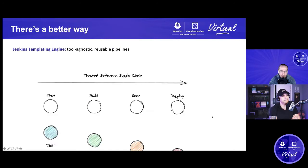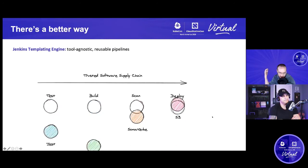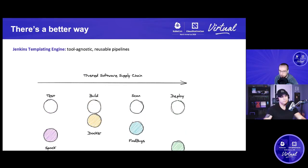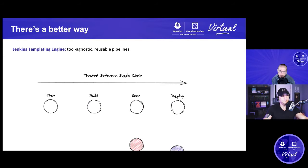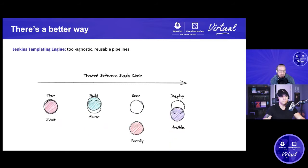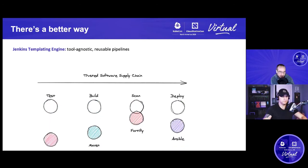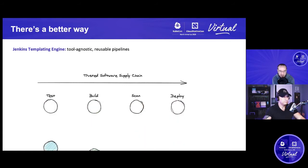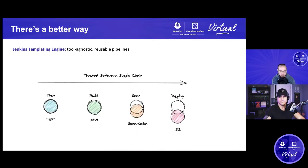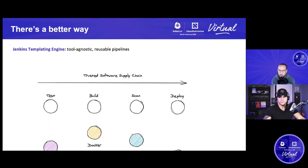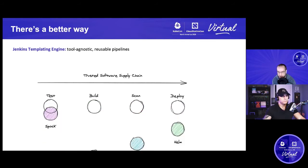Let's talk about a better way. Despite different teams using different tools, when we drew the pipeline on the whiteboard it didn't care what type of application it was. We defined in tool-agnostic terms the business process to get code from a developer's laptop to production as quickly as possible without sacrificing code quality or security. We've spent the last couple of years working on an open source project called the Jenkins Templating Engine — a plugin for Jenkins we're going to demo in a moment.